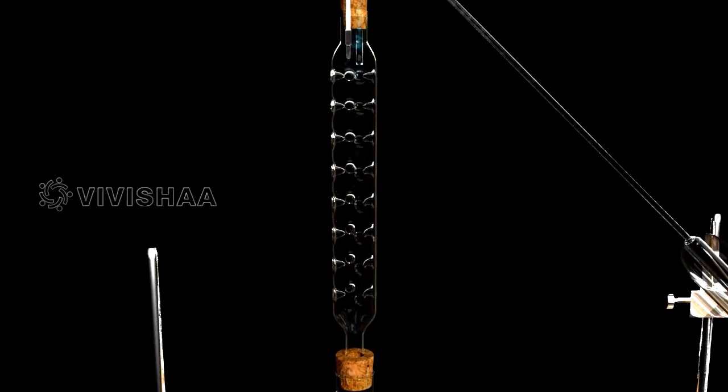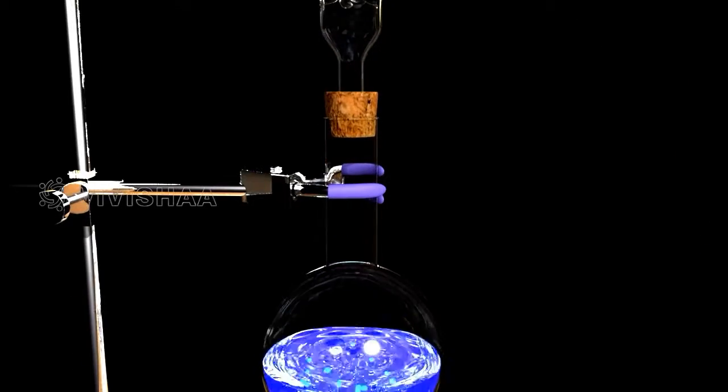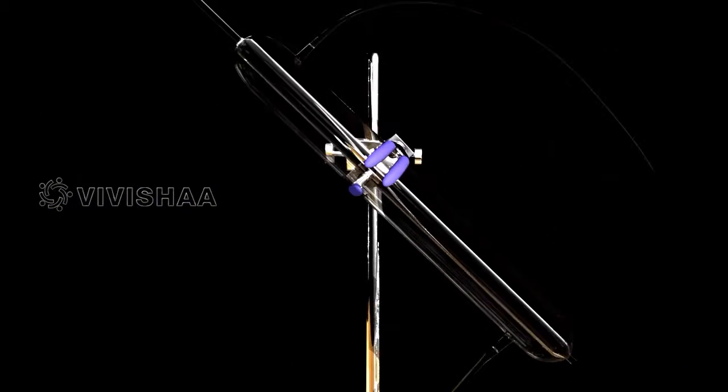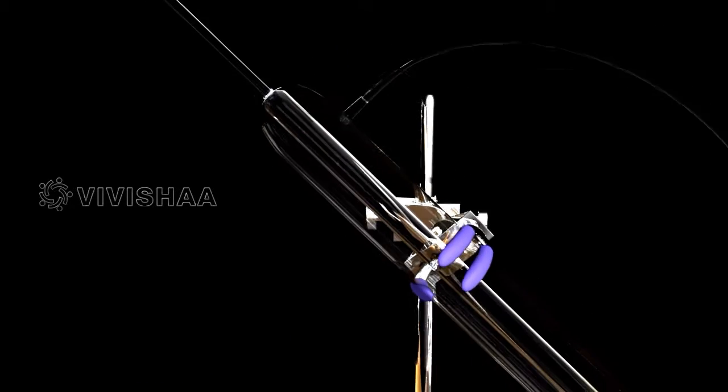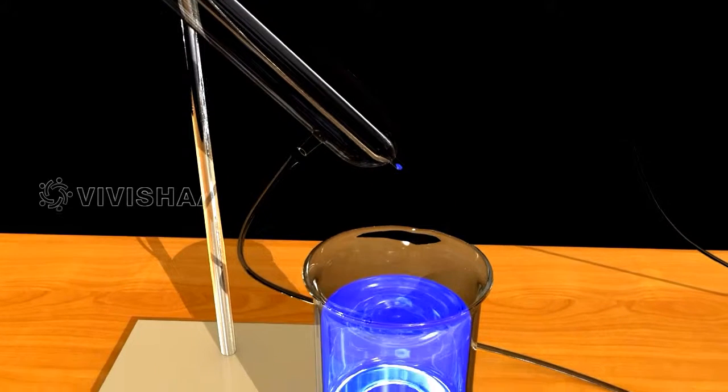The fractioning column is fitted between the distillation flask and the condensing unit which has water inlet and an outlet. The condensing unit opens into a collecting vessel.